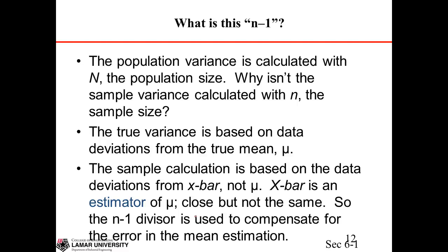Why do we divide by n minus 1 instead of n to get the sample variance? The population variance is calculated divided by capital N, the population size. That's because the true variance is based on the data deviation from the true mean mu, while the sample calculation is based on the data deviation from x-bar, not mu. We approximate mu with x-bar — x-bar is an estimator of mu, close but not the same. So the n minus 1 divisor is used to compensate for the error in the mean estimation.